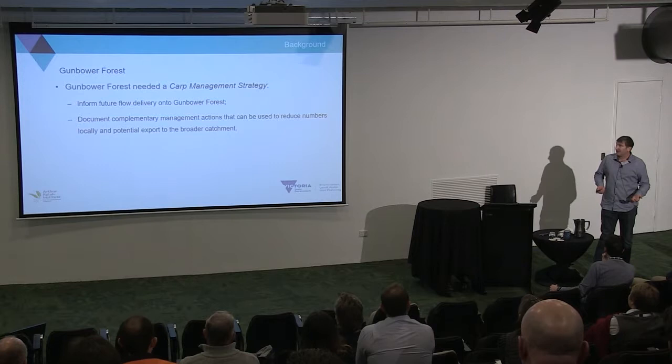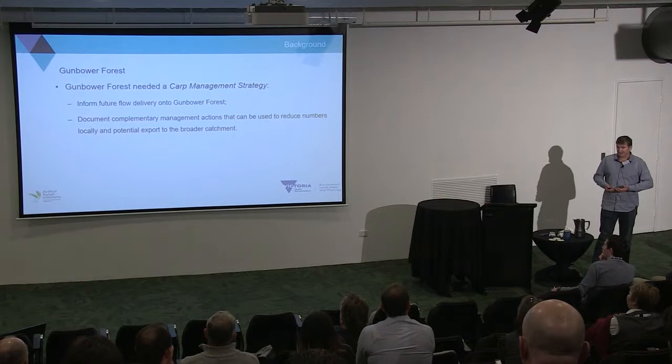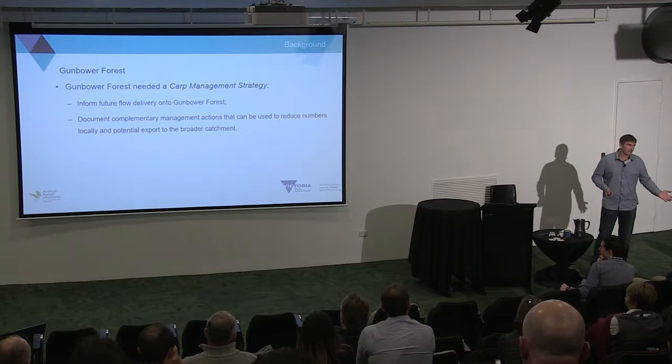Because of all these carp, the North Central CMA identified that the Gunbower Forest needed a carp management strategy — to help inform future flow delivery into the forest and to document complementary management actions that can be used to reduce carp numbers locally and their potential export to the broader environment, which Charles just talked about.